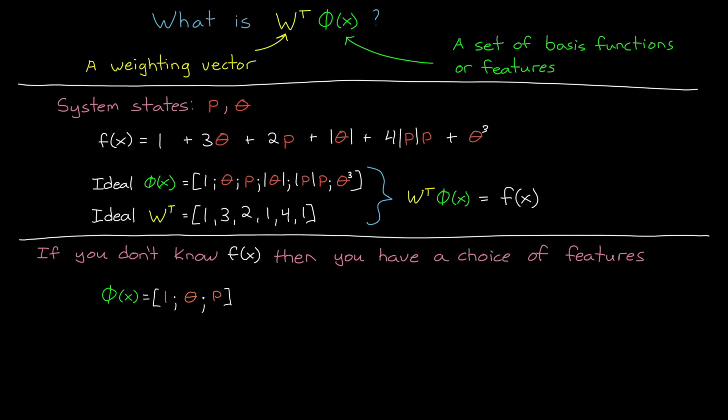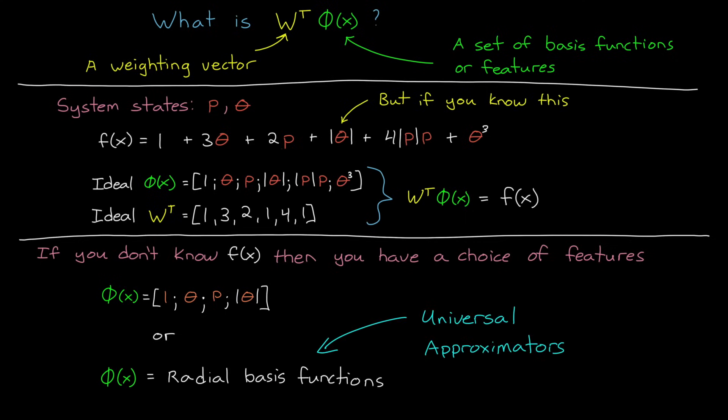However, if we had some understanding of the structure of the variations, like, for example, we know that there's a term that is proportional to the absolute value of theta, then we could add that additional term to phi. And now our approximation would include at least one nonlinear term, and the fit will be better. However, if you don't know much about the individual features of F of X at all, it's common to use a set of general features, like radial basis functions, that are universal approximators. This just means that you can represent any arbitrary function F of X as long as you have enough of them and set them up correctly.